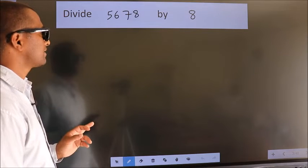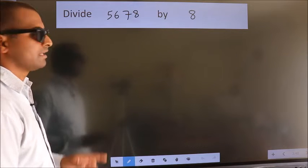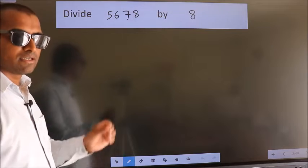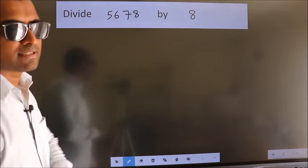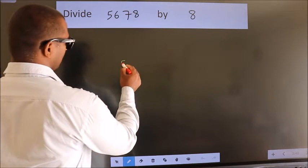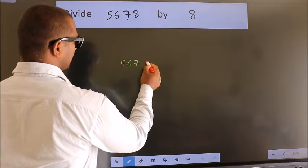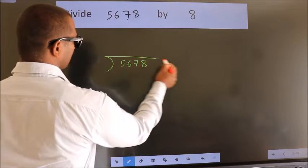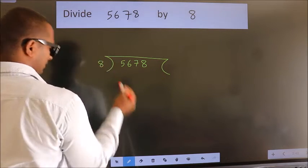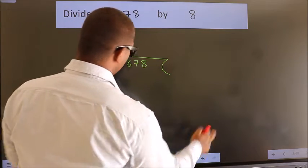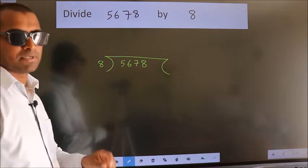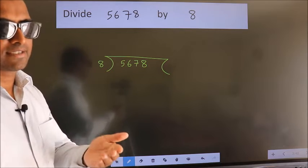Divide 5,678 by 8. To do this division, we should frame it in this way. 5,6,7,8 here, 8 here. This is your step 1.